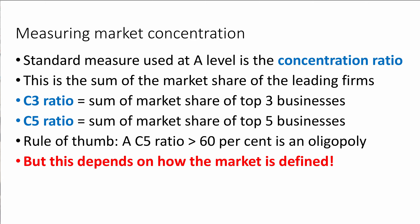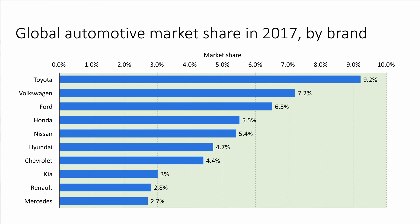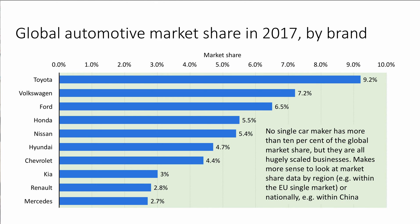The level of market concentration depends critically on how the market is defined. Taking the global car market in 2017, Toyota, Volkswagen, and Ford are the three leading firms, but no single car maker globally has more than 10% of the world market even though all are significantly globally scaled businesses. If you wanted a higher concentration measure, you might focus on market share by region — inside the EU single market, or in the US, India, or China.